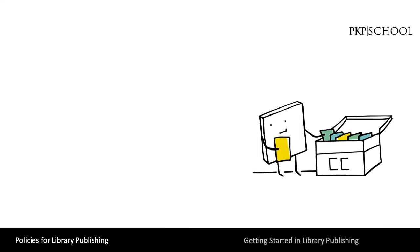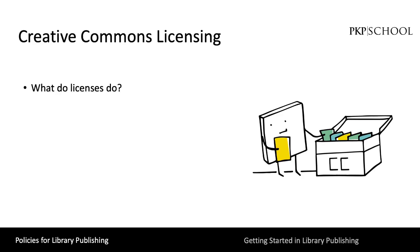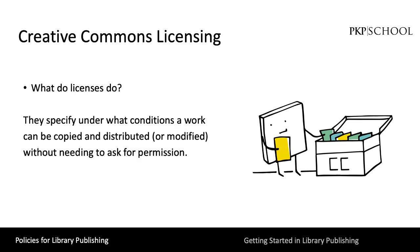So what is Creative Commons licensing? It is a way for your library publishing program to make work freely available to the public. Licenses give you the option to remove barriers to reuse creative works by specifying under what conditions a user can copy, distribute, or modify a work without needing to ask for permission from the author or publisher. This ability to share and distribute the work is a key part of open access publishing and goes beyond just making the work freely available.